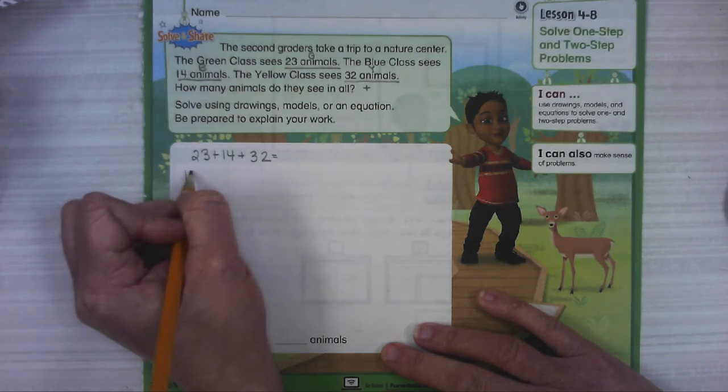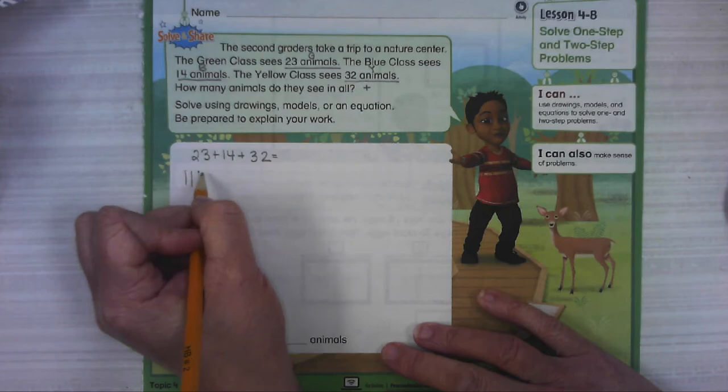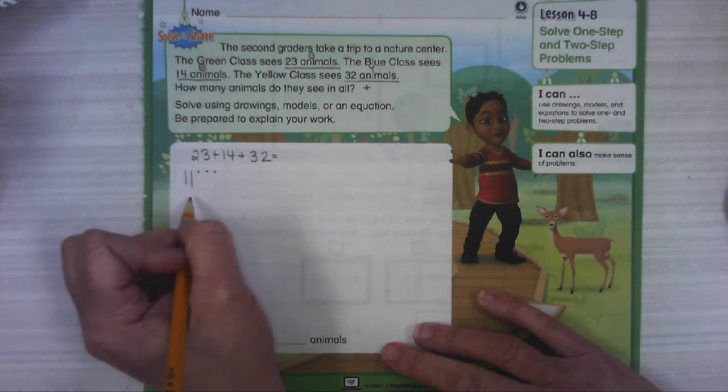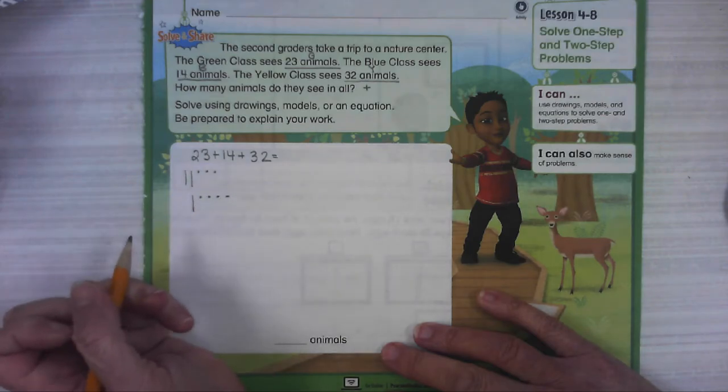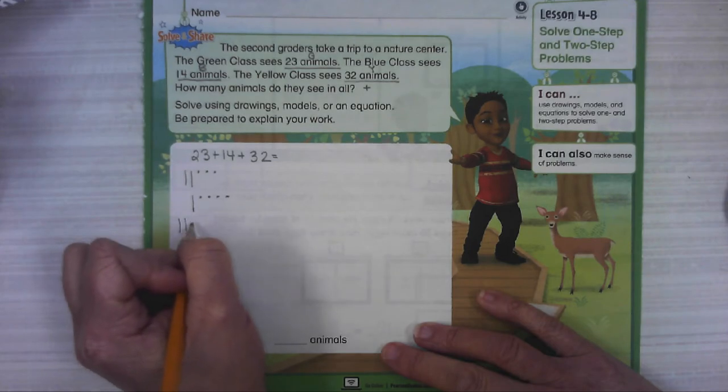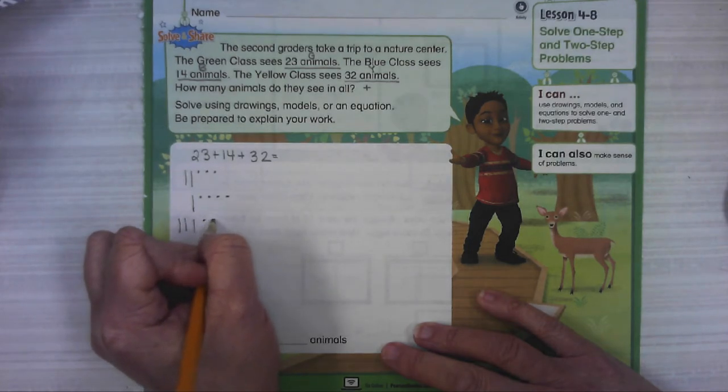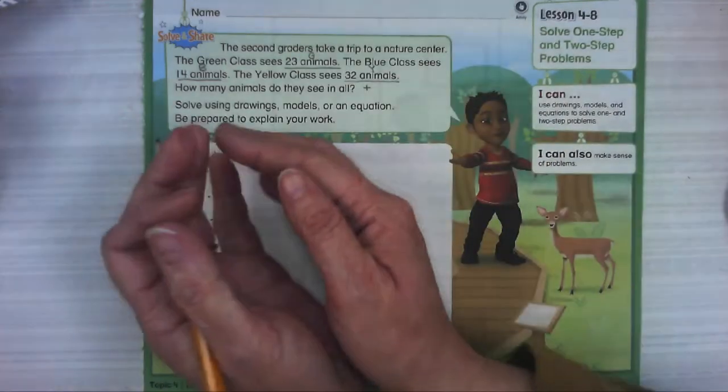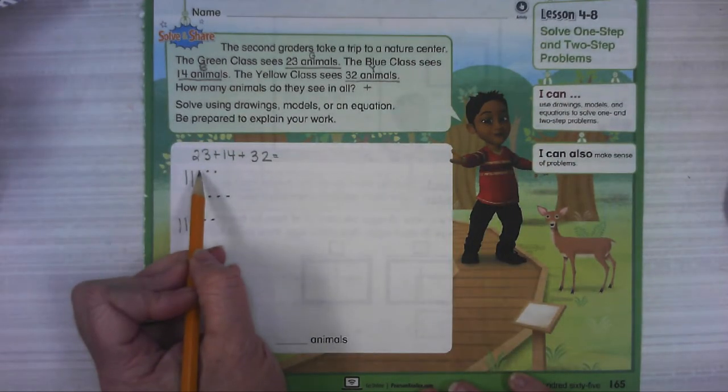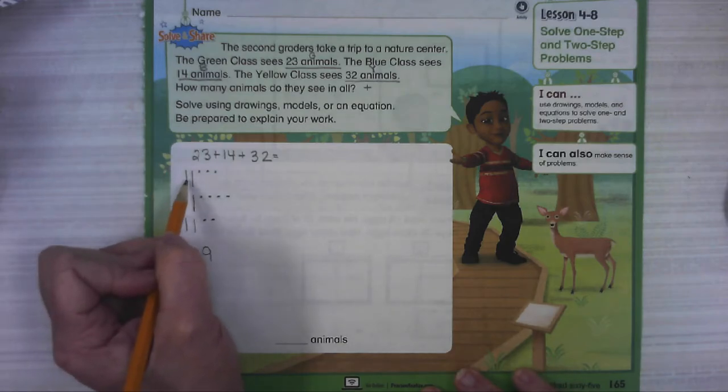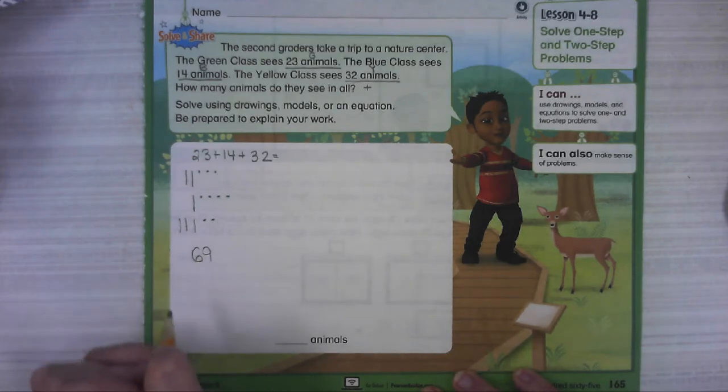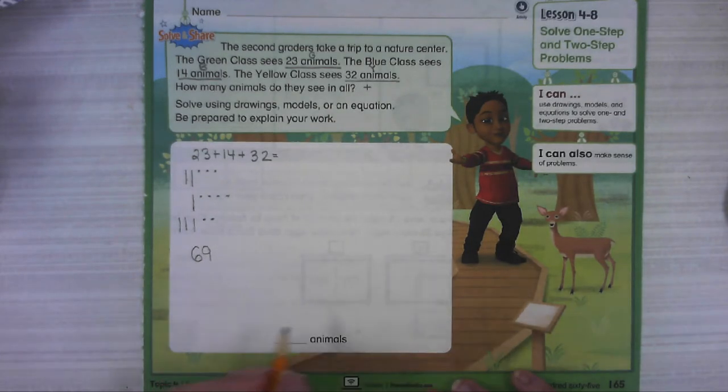So I'm going to model 23: 10, 20, 21, 22, 23. Then 14: 10, 11, 12, 13, 14. And 32: 10, 20, 30, 31, 32. In all just means I'm going to squish it all together. In the ones place, we have 1, 2, 3, 4, 5, 6, 7, 8, 9 - that's 9 ones. Then 10, 20, 30, 40, 50, 60. Six in the tens place is 60. So we got 69 animals.